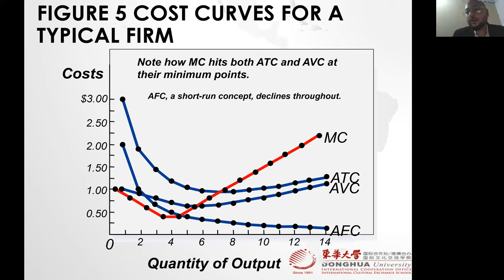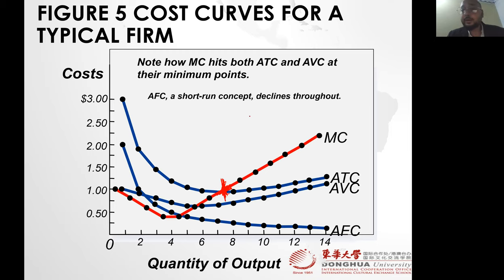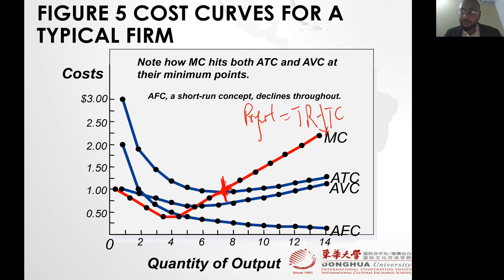Average total cost crosses the marginal cost at its minimum, or marginal cost crosses average total cost at its minimum. Profit equals revenue minus total cost, and we want that cost to be at a minimum. So we need to produce where we have minimum cost — that is why we call this the efficient scale.